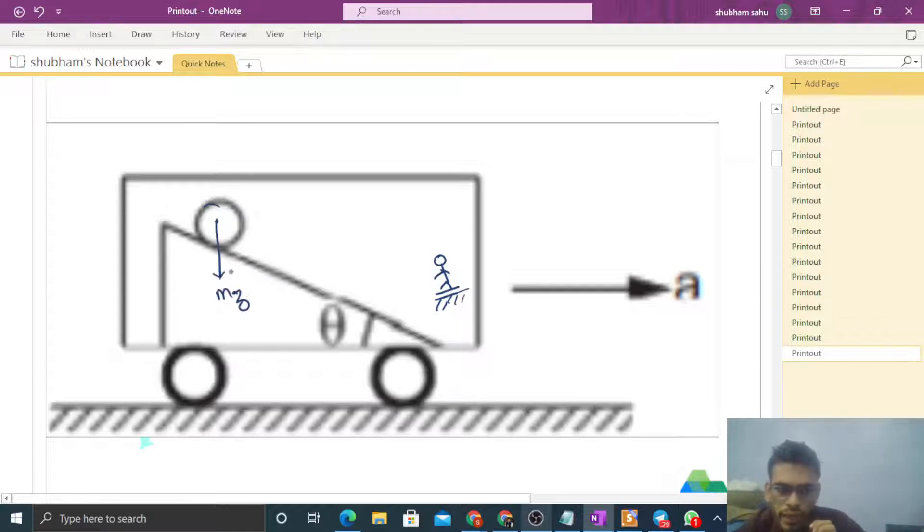One: mg vertically downward. One: normal reaction. And because we are drawing the free body diagram from a non-inertial frame, we have a pseudo force. The value of pseudo force is mass into acceleration of the frame. This frame is moving with an acceleration a in the forward direction, so ma will be in the backward direction.